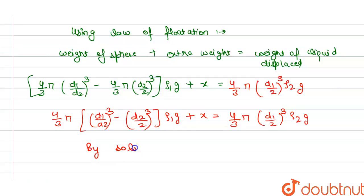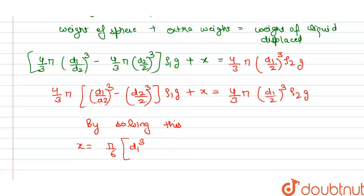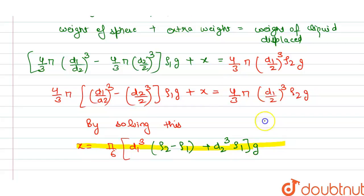By solving this equation, we get x — the extra weight — is equal to π/6 × [d1³ × (rho2 − rho1) + d2³ × rho1] × g. This is the extra weight, and this is our answer.